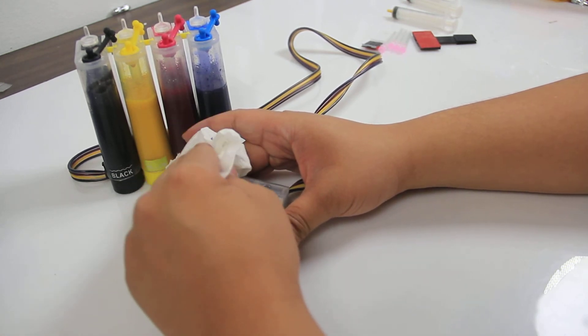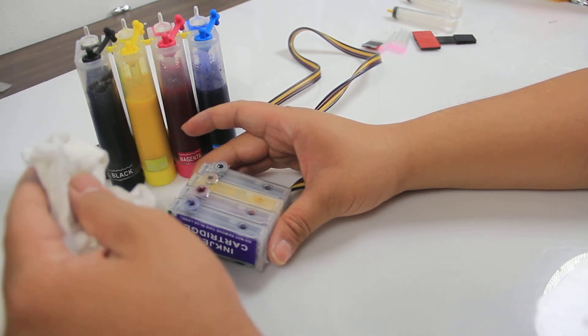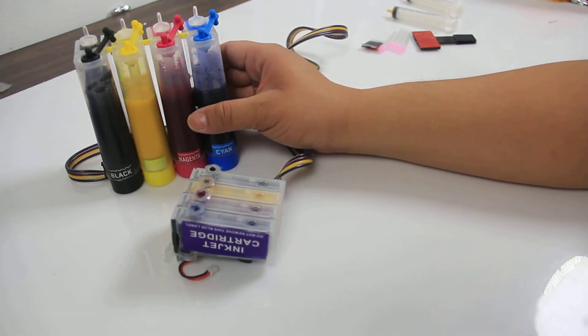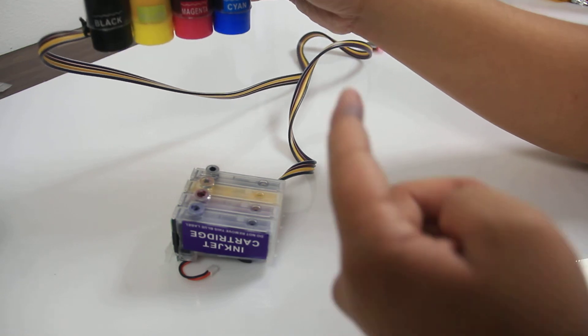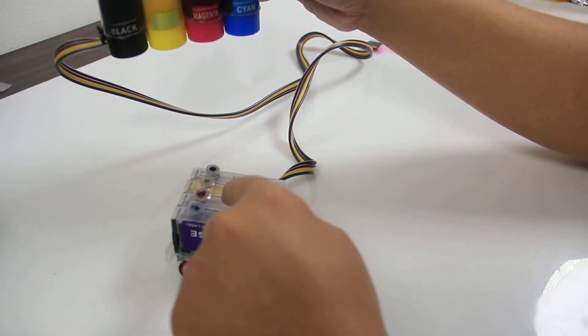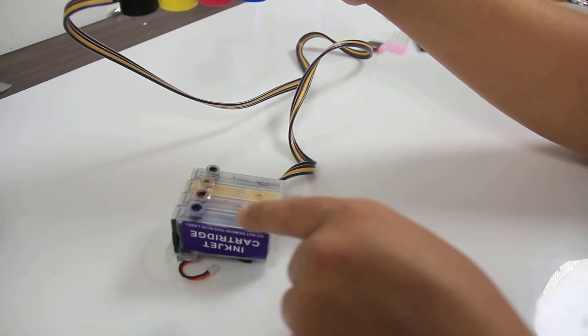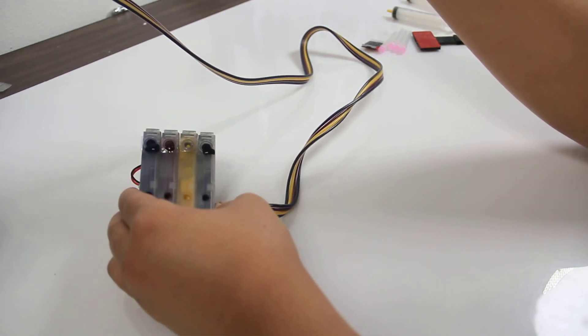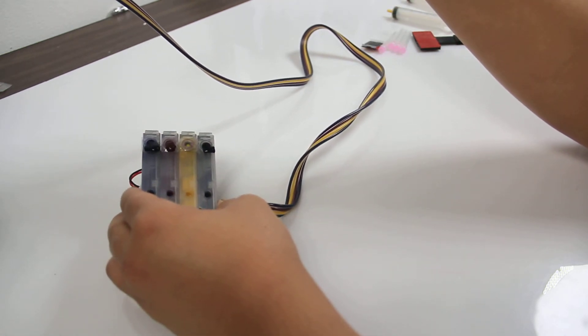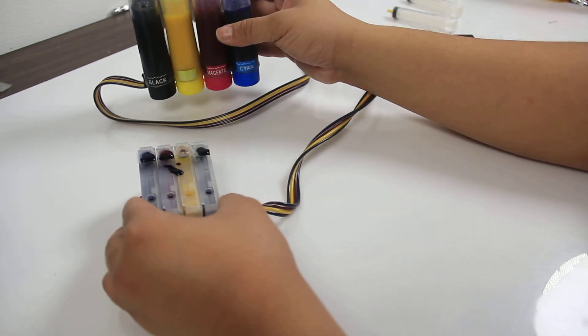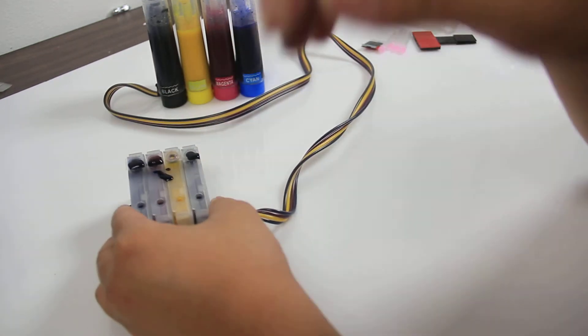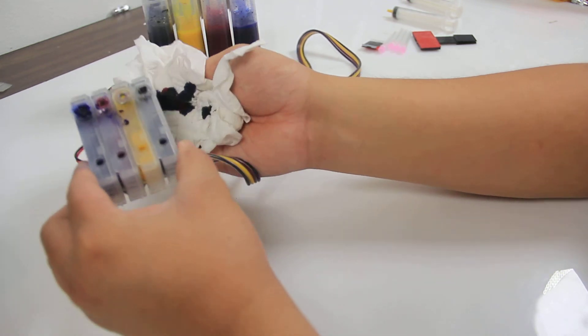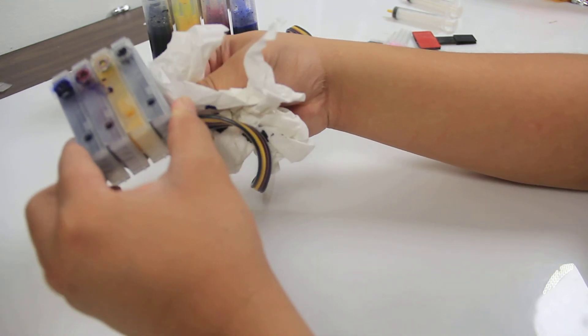So that's how you actually fill and prime one of these CISs. One note to make sure that you don't do is never raise the ink tanks higher than the printer. For any reason you set it above your printer, the gravity would cause the ink to leak. You can already start seeing the black. See all the colors are starting to bubble? You can see them start to leak. See that? So you want to make sure that they're at the same base level. Because anytime you raise them, it's going to cause issues where the ink may leak into your printer. And we definitely don't want that happening.